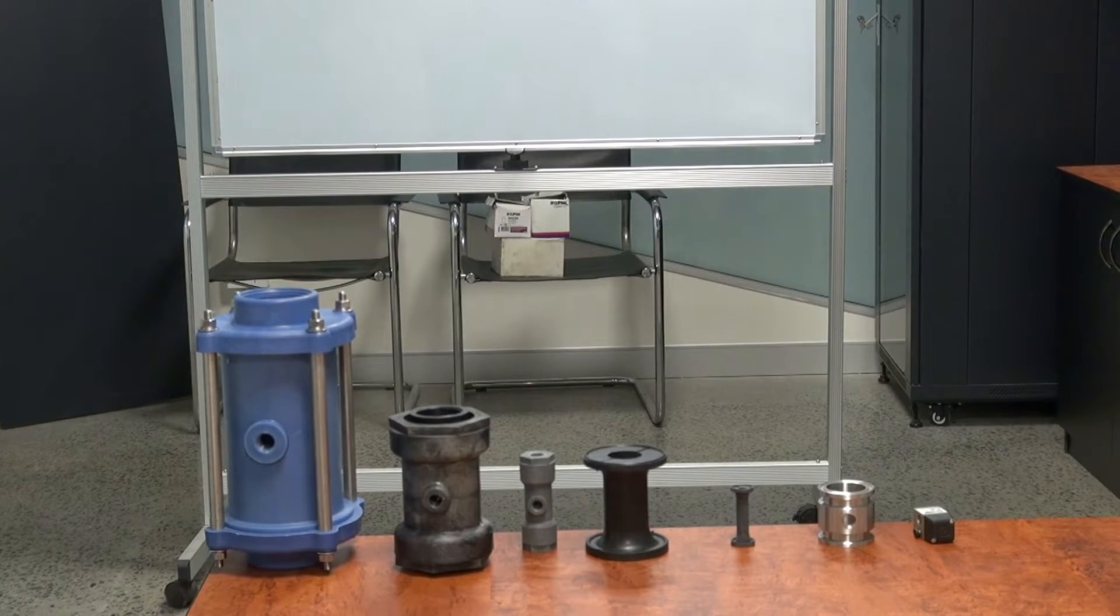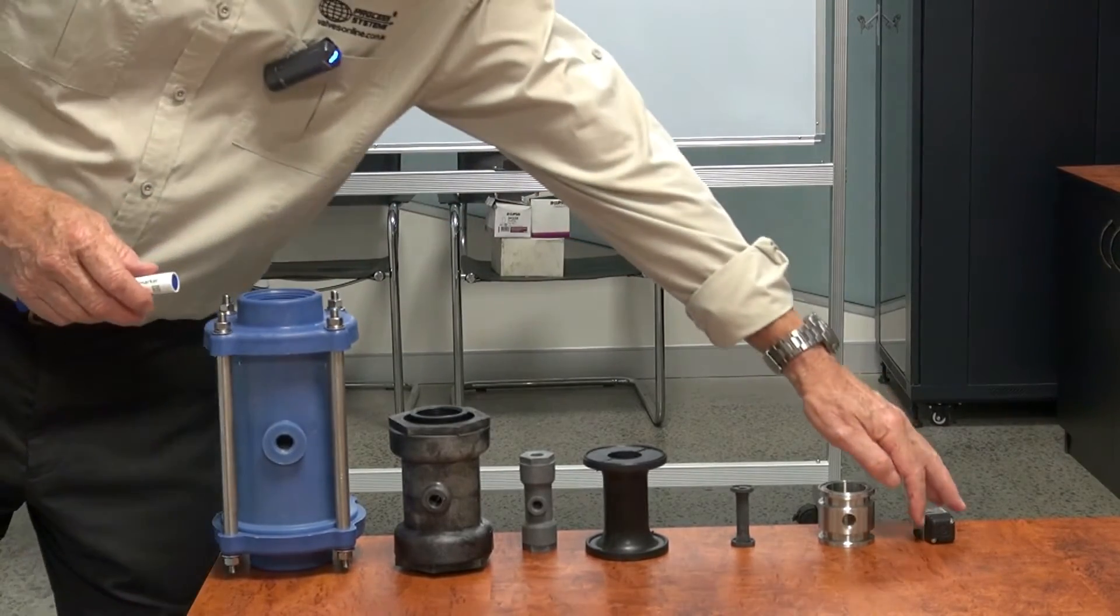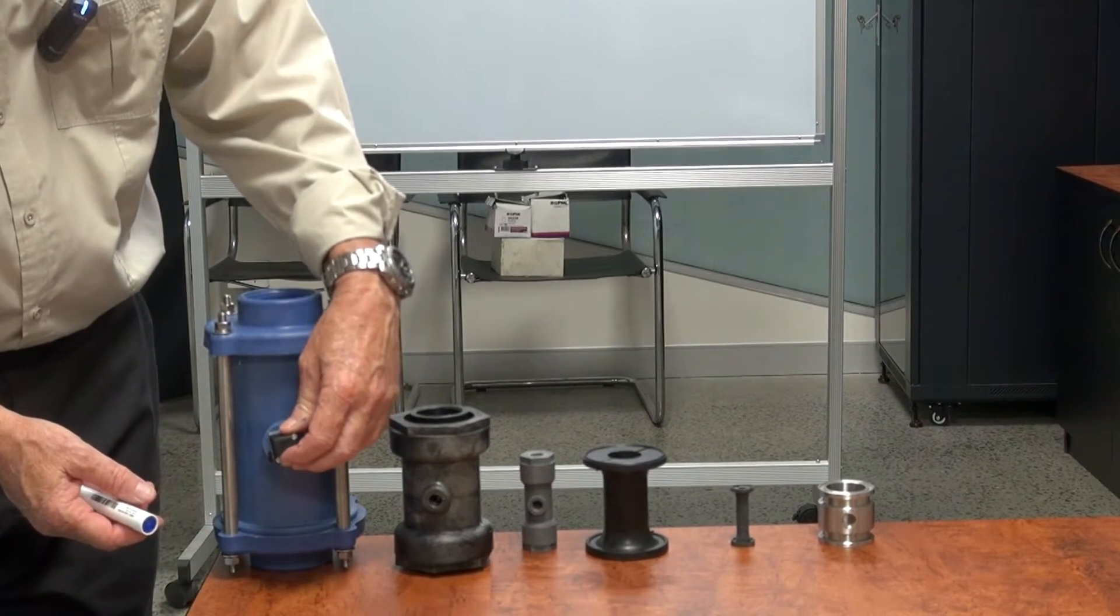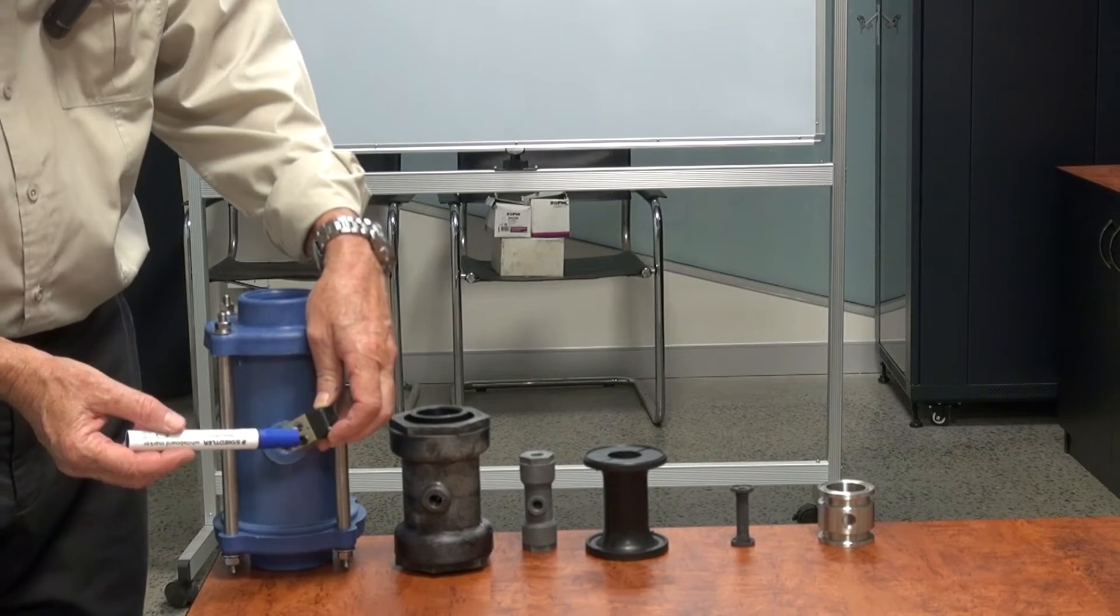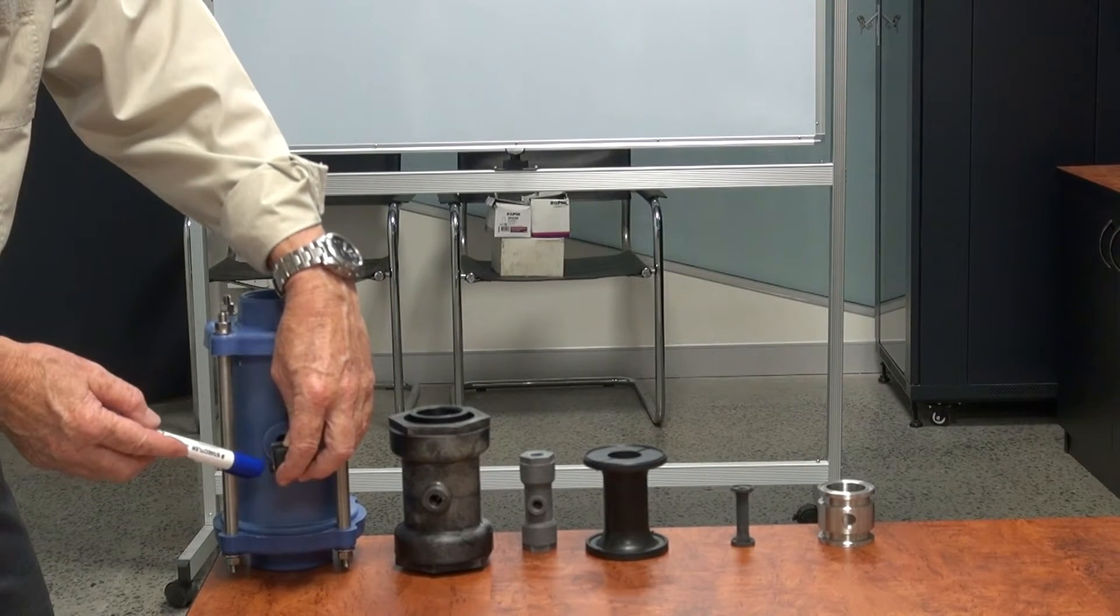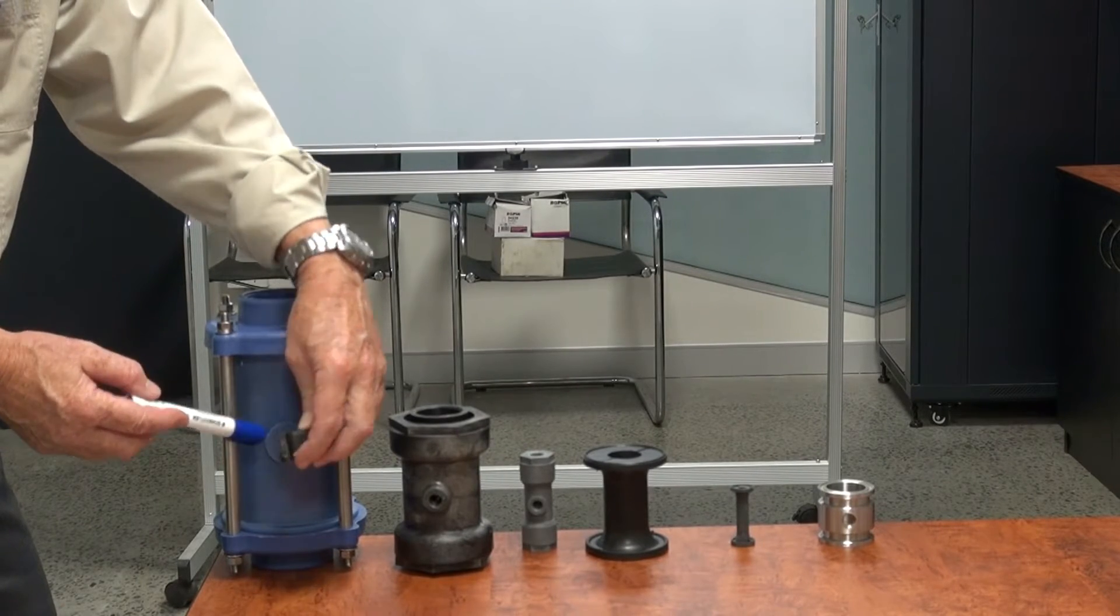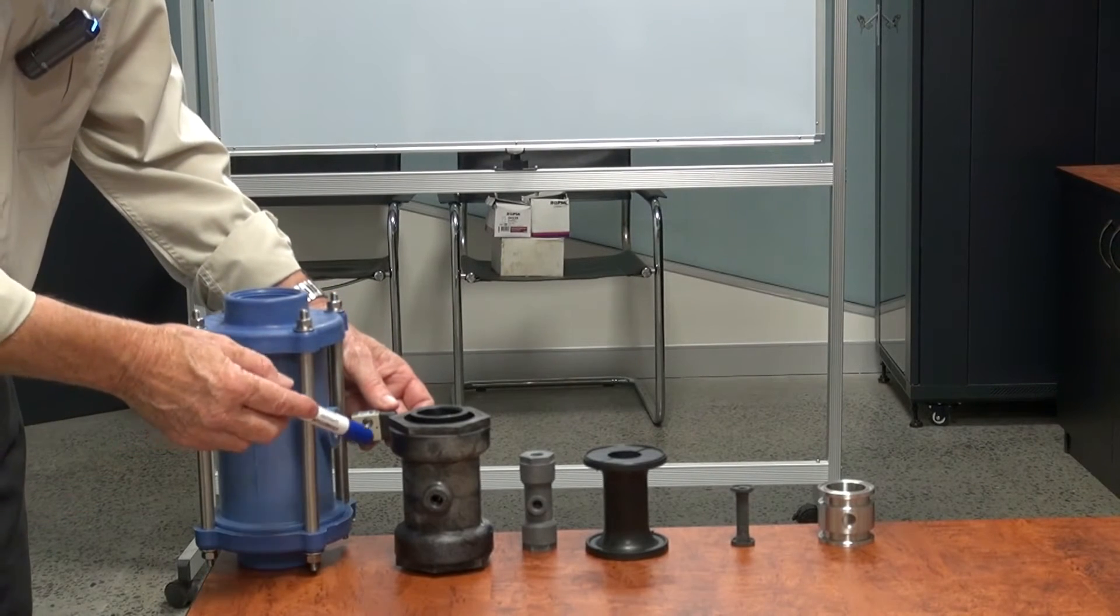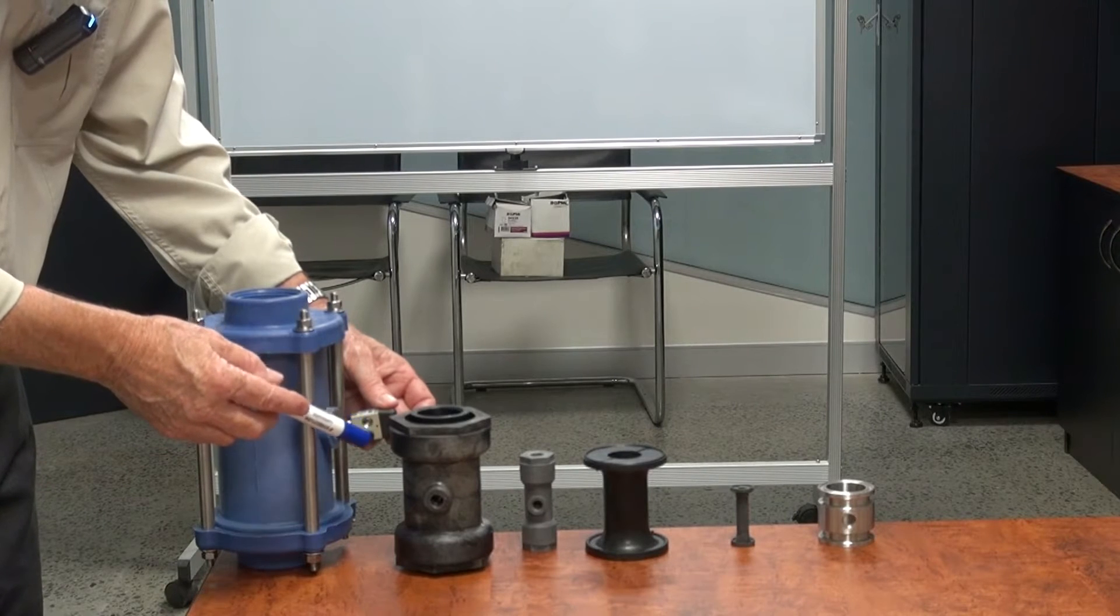What about using an air pilot check to turn it into a normally closed? Yes, you can use an air pilot check. In fact, I have one sitting here as an example. It can screw into this pilot port itself, and the signal can go into the side here. When you remove the air signal, it can hold the air inside the sleeve itself, keeping it closed. When the signal comes back on again, it can release it through this check valve assembly.